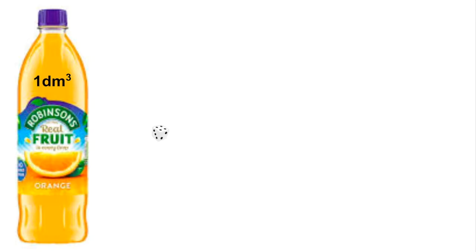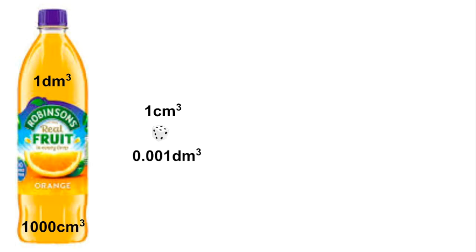On the right we've got a dice, which typically has a volume of one centimetre cubed. You can see just from the two pictures that a decimetre cubed is a larger volume than a centimetre cubed. In fact it's a thousand times larger, so one decimetre cubed is the same as 1000 centimetres cubed. Going the other way, one centimetre cubed is 0.001 of a decimetre cubed.